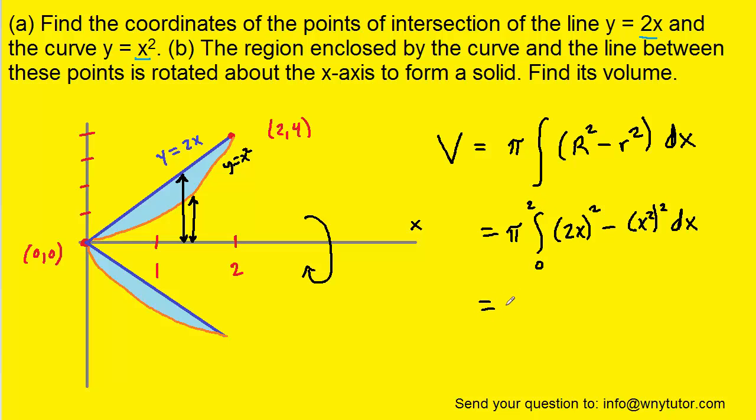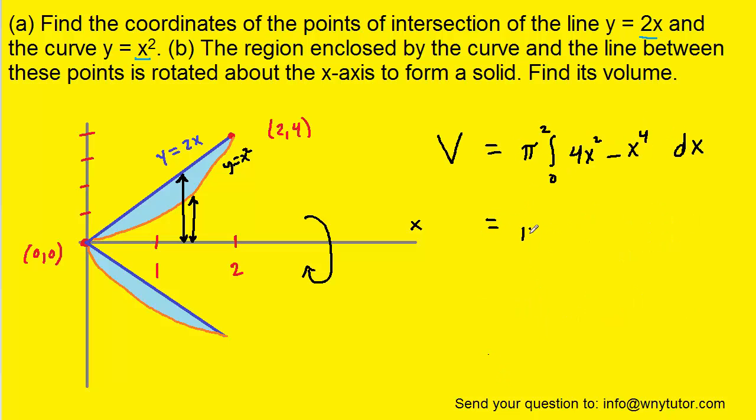Now this integral can be simplified by squaring each of the radii. We're going to end up with 4x² minus x⁴, still integrating with respect to x. Then we can go ahead and do the integrating. This is a relatively simple integral because all we have to do is add 1 to each exponent. That's going to become 4x³ and then divide by that new exponent, which is 3.